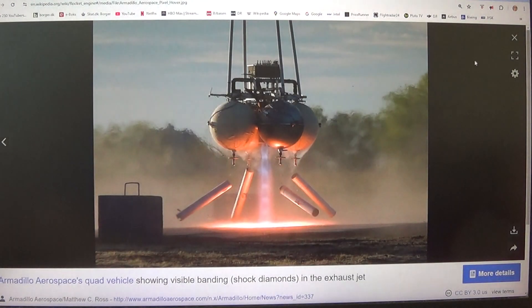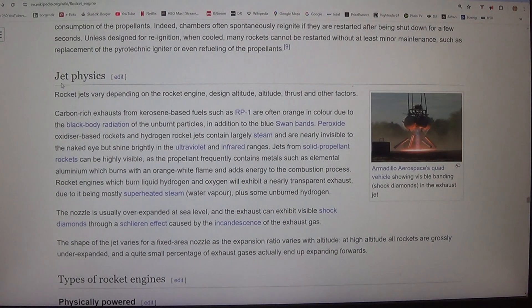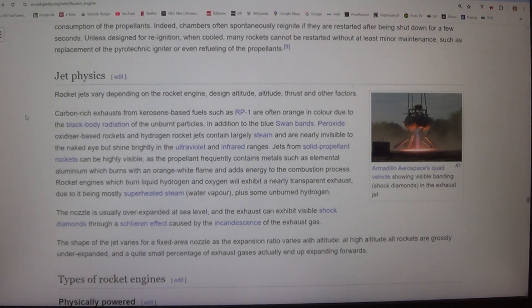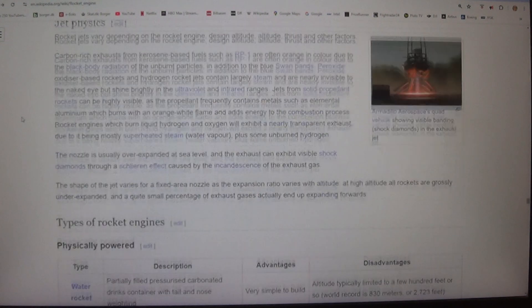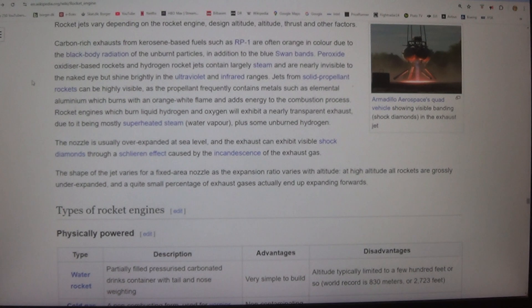Jet physics. Rocket jets vary depending on the rocket engine, design altitude, altitude, thrust, and other factors. Carbon-rich exhausts from kerosene-based fuels such as RP-1 are often orange in color due to the black body radiation of the unburned particles, in addition to the blue swan bands. Peroxide oxidizer-based rockets and hydrogen rocket jets contain largely steam and are nearly invisible to the naked eye but shine brightly in the ultraviolet and infrared ranges. Jets from solid propellant rockets can be highly visible, as the propellant frequently contains metals such as elemental aluminum which burns with an orange-white flame and adds energy to the combustion process.